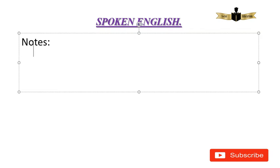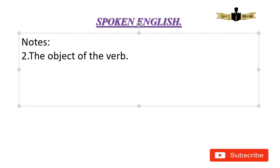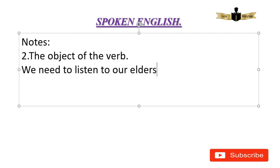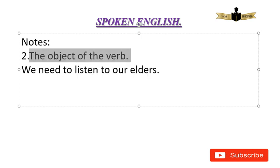The next point: object of the verb. The infinitive phrase can come as the object of the verb. For example: 'We need to listen to our elders.' Here 'need' is the verb. 'To listen to our elders' is the infinitive phrase acting as the object of the verb.